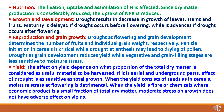Seventh, effect on nutrition: the fixation, uptake, and assimilation of nitrogen is affected. Since dry matter production is considerably reduced, the uptake of nitrogen, phosphorus, and potassium is also reduced. Eighth, growth and development: drought results in decrease in growth of leaves, stems, and fruits. Maturity is delayed if drought occurs before flowering, while it advances if drought occurs after flowering.